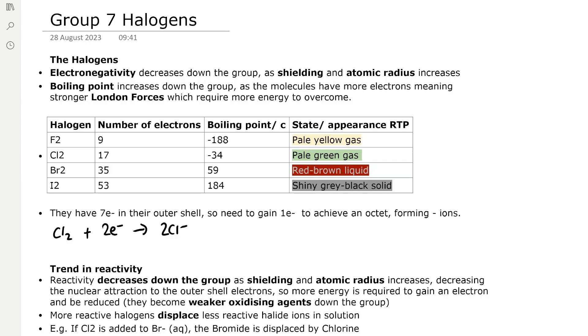In the halogens, electronegativity decreases down the group because shielding and atomic radius increases as new energy levels are added. Boiling point increases down the group because the molecules have more electrons, meaning stronger London forces which require more energy to overcome.